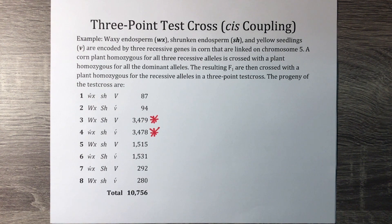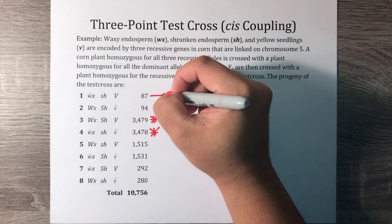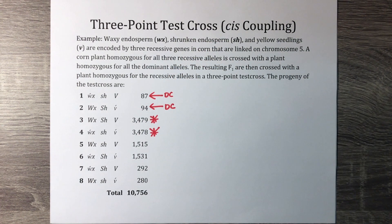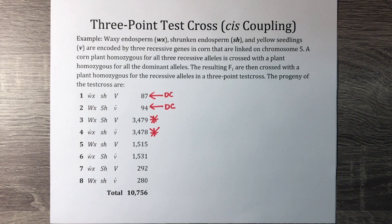Next, we will identify the double crossover progeny. These progenies should always have the two least numerous phenotypes. In the example, progeny 1 and 2 are the double crossover progeny. These numbers confirm that the configuration of this test cross is coupling or cis configuration, meaning that an individual with a non-recombinant phenotype has mutant alleles for all loci on one chromosome and wild-type alleles on the other. The opposite is repulsion or trans configuration, in which each chromosome has a combination of mutant and wild-type alleles. Now to determine relative distances among the 3 loci, we must identify all crossing-over events in the other progeny phenotypes.